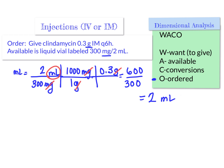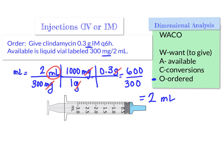I'm going to pull out 2 mL from that 300 milligram vial and give it to my patient. Here is my syringe — I fill it up to 2 mL, put a needle on it, and give it IM into the muscle.